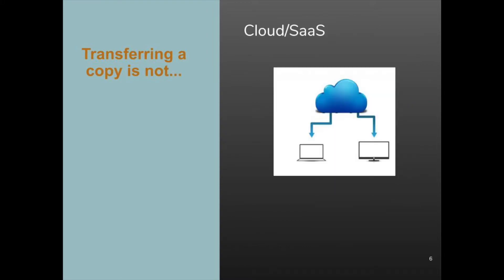There is one thing that is not distribution, and that is software as a service deployment. In SaaS deployment, the software stays on the cloud servers and no copies are transferred to the user's device. All SaaS involves the transfer of a small amount of client-side code, like JavaScript. That software is distributed, but it is usually a very small part of the SaaS system. There are some open source licenses that use SaaS as a trigger for conditions like source code sharing. They are called network copyleft licenses, and they include the Affero GPL. If you want to know more about that, check the resources listed at the end of this presentation.